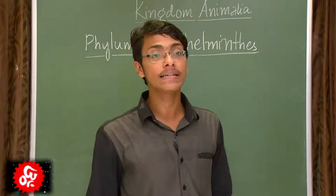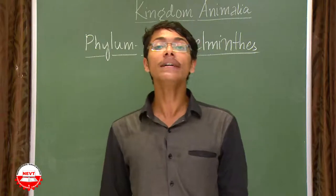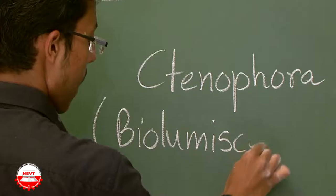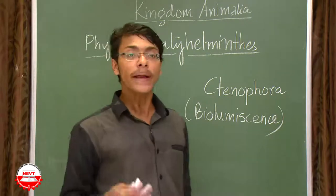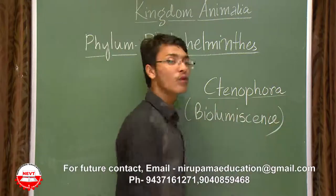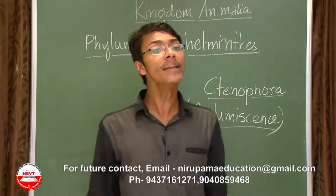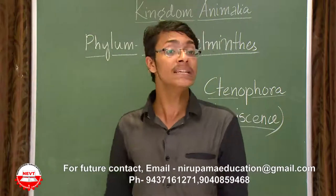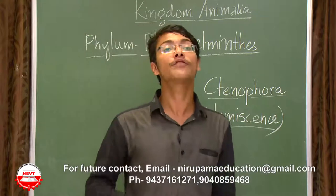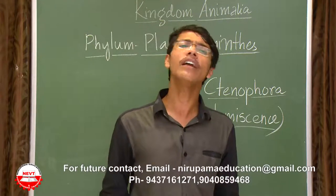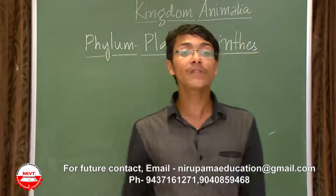The next phylum we are going to discuss is Phylum Platyhelminthes. But first, there is a phylum called Ctenophora, which comes between Platyhelminthes and Cnidaria in higher biology classes. The most striking feature of Ctenophora is bioluminescence — luminescence means a light-emitting property. Members of Ctenophora can emit light. A famous example is the sea comb.